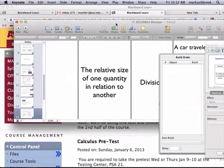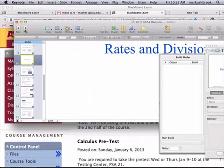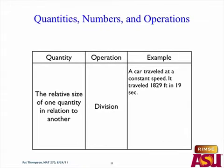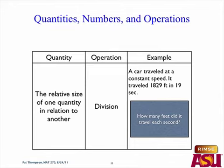Let's start off with another one of these bar examples. We're talking about rates and division. We talked about how division — the result of a division, the quotient — represents relative size of one quantity in relation to another. A car traveled at constant speed: it traveled 1,829 feet in 19 seconds. How many feet did it travel in each second? I want you to create a bar diagram and go through a process using the bars to answer this question. The process is the important thing.